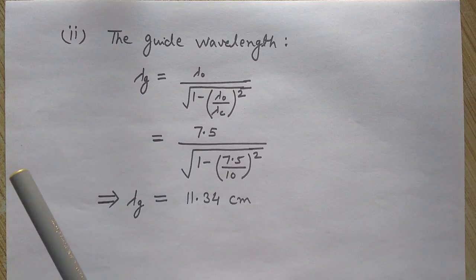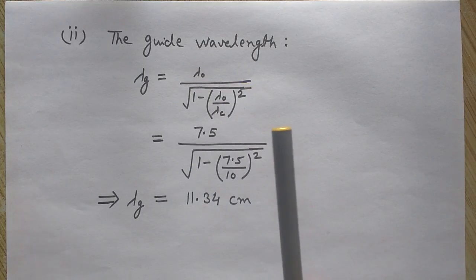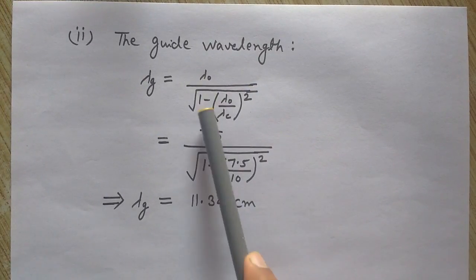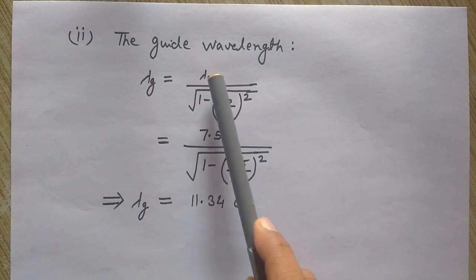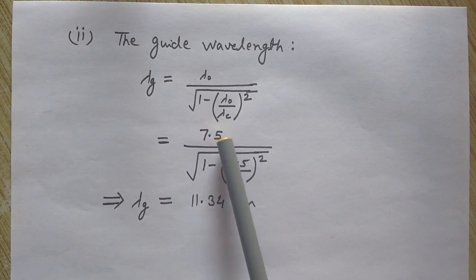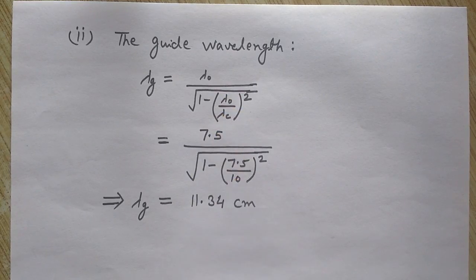The formula for the guide wavelength lambda G is equals to lambda 0 divided by under root of 1 minus lambda 0 by lambda C whole square. So I know here each thing, lambda 0 I know 7.5 and this lambda 0.